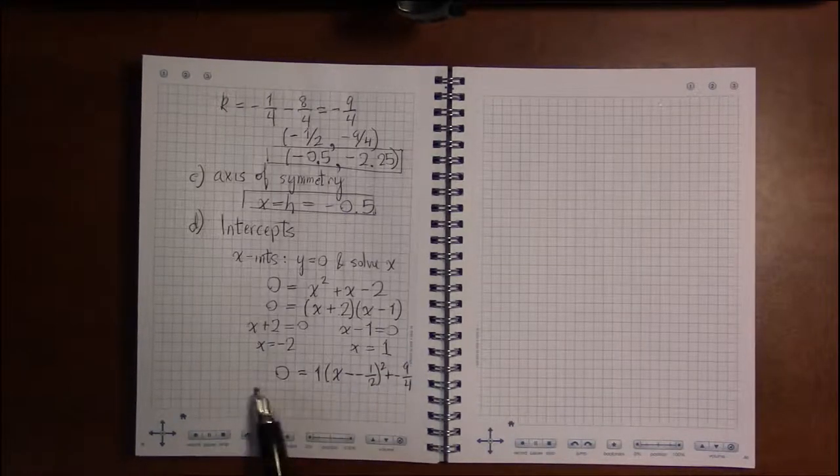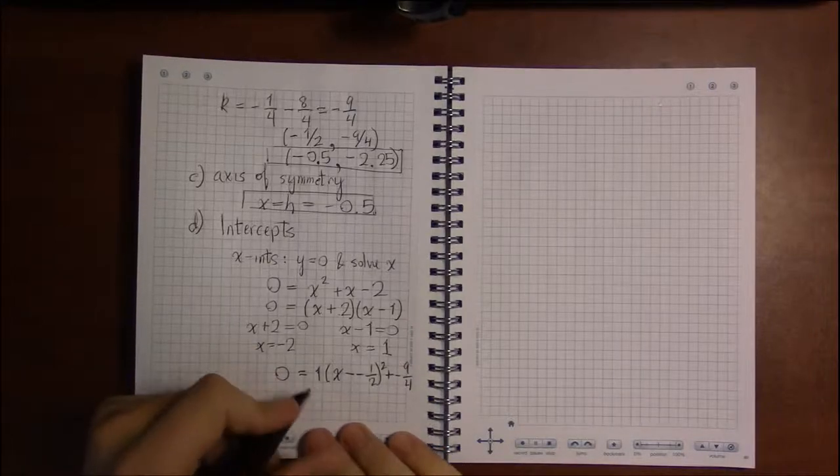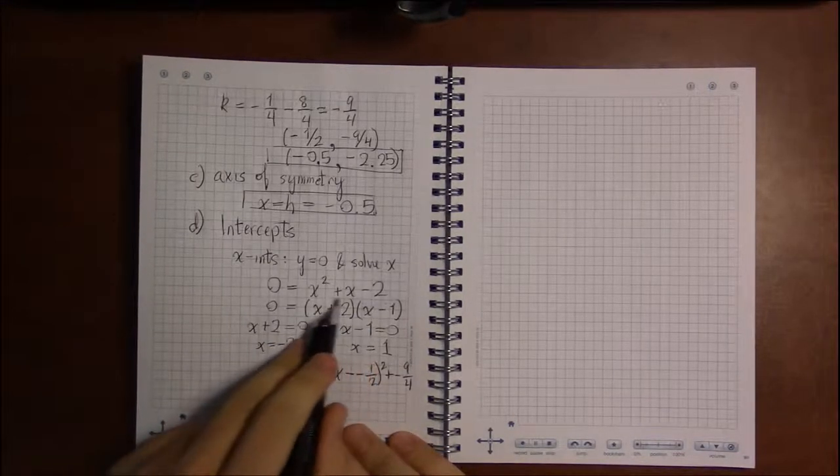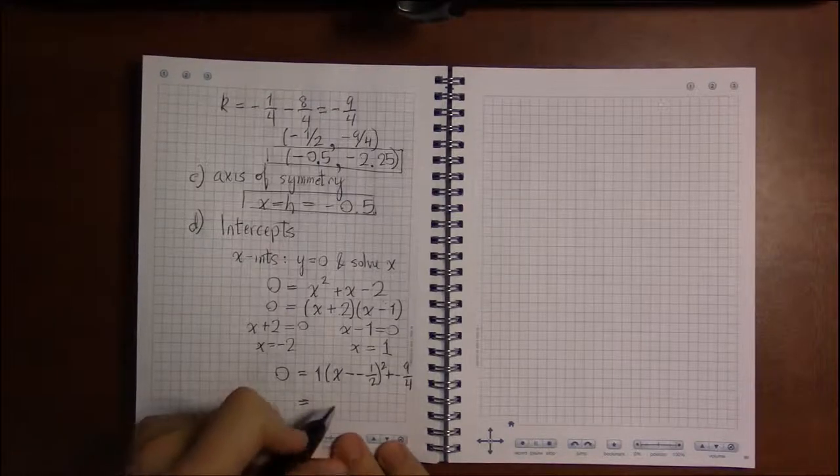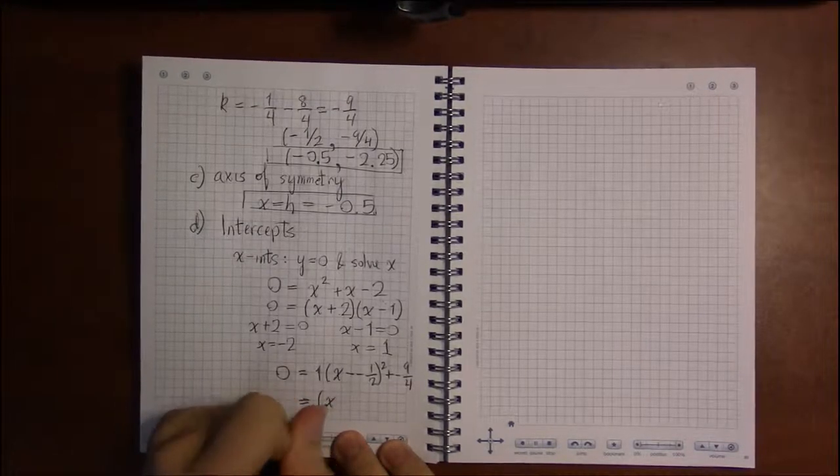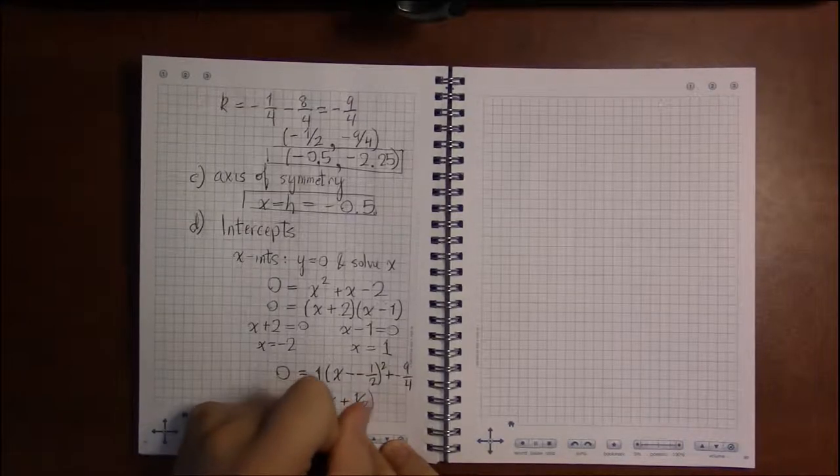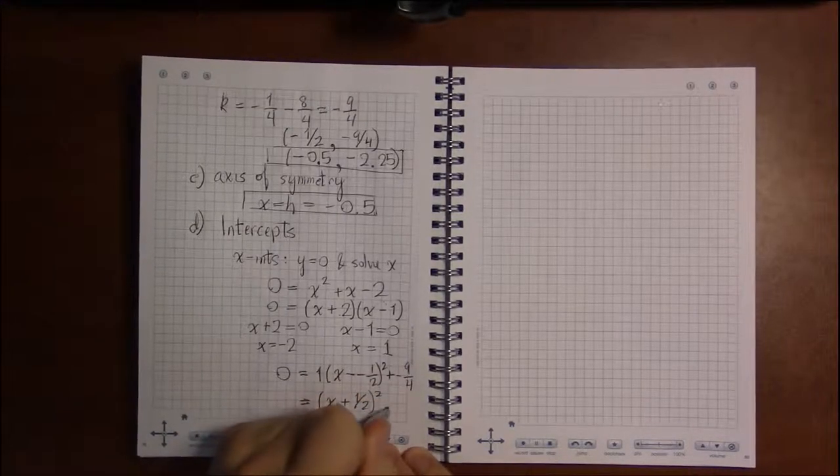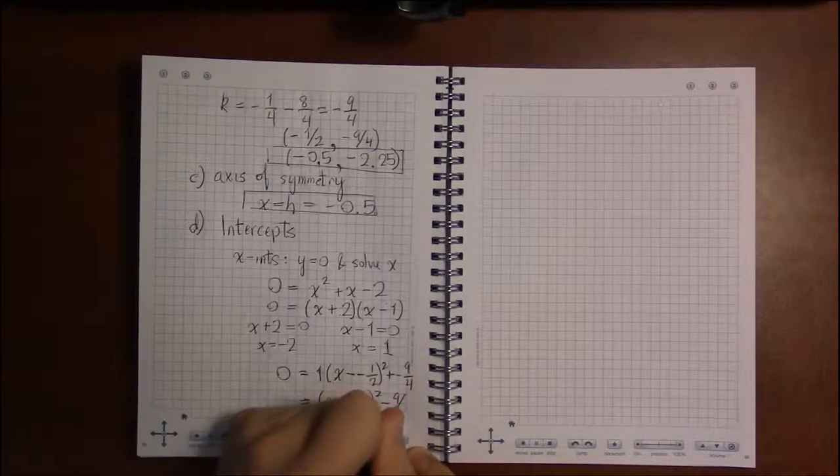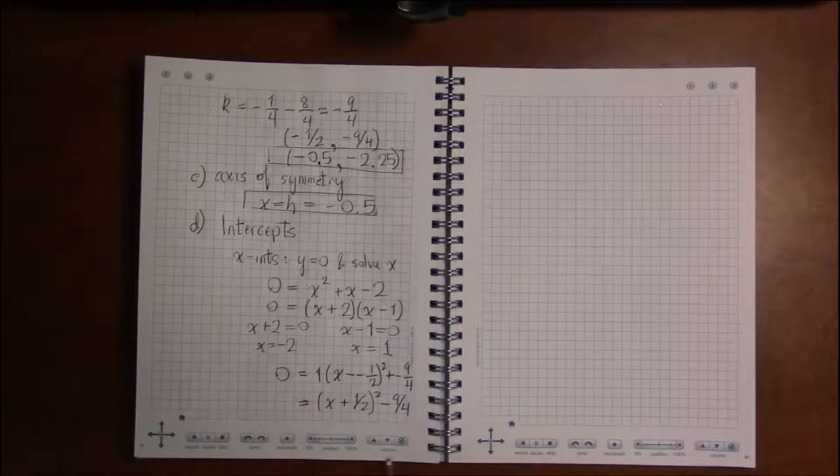So, this, it turns out, is easier to solve than using quadratic formula on this. We have x minus a minus becomes plus 1 half, plus a minus 9 quarters is just minus 9 quarters.